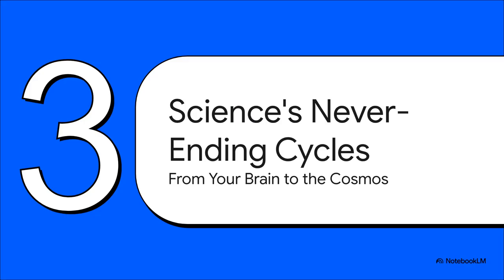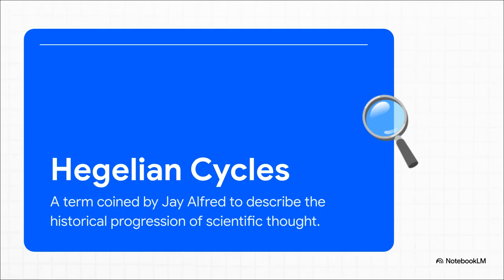Okay, so this is where it gets really big. How does this little quirk of our individual brains scale up? Well, according to J. Alford, this isn't just about why we miss gorillas in videos. He argues that this mental habit actually shapes the entire history and maybe the future of science itself. Alford gives this process a name, Hegelian cycles.